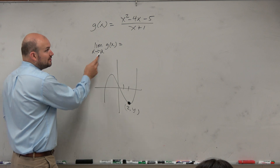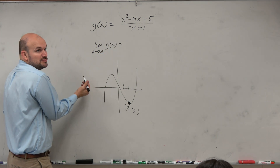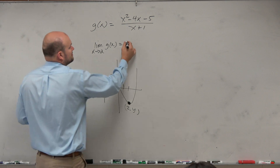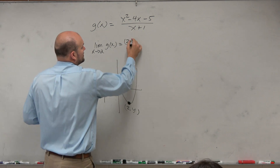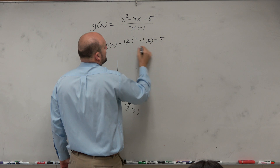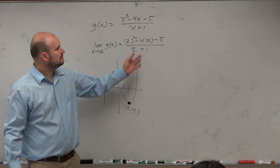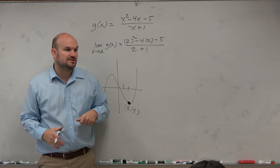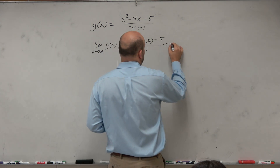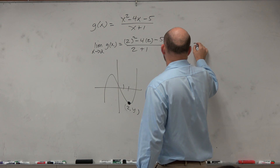So as long as we can plug in 2, let's look at this. Can we plug in 2 into this equation? Is there any issues with plugging in 2? I don't see any. So I would just plug in 2. So 2 squared is 4, minus 4 times 2 is negative 4, minus 5 is negative 9, over 3 equals negative 3.